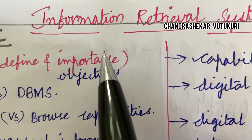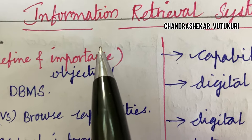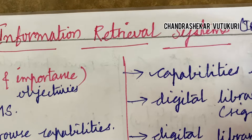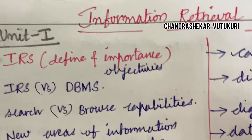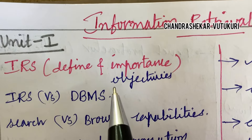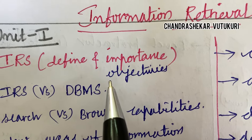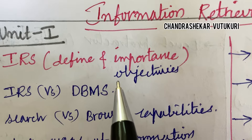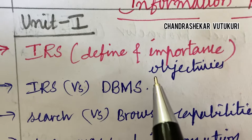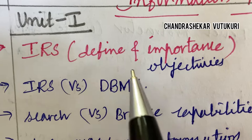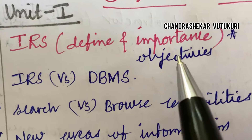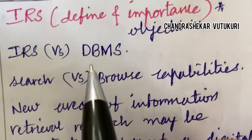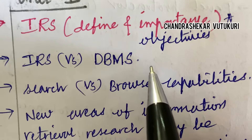Welcome back students. This video covers the important questions for the course Information Retrieval Systems (IRS) under the JNTU R18 regulation for computer science engineers. I have come up with a few important questions. The first and foremost question is on IRS objectives, its definition and importance — possibly a short question — and IRS versus DBMS differences.